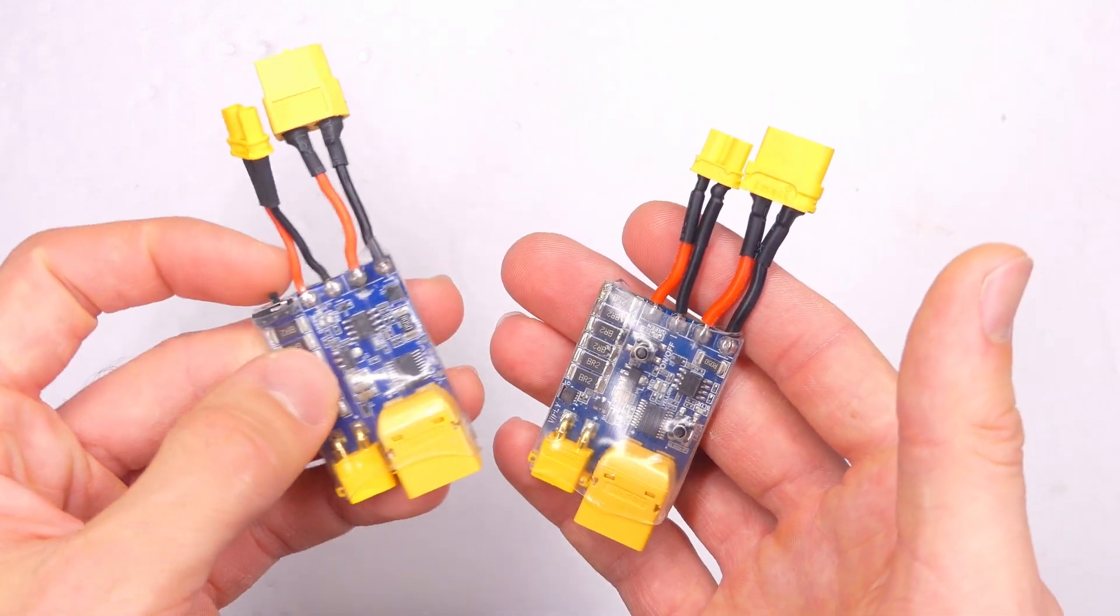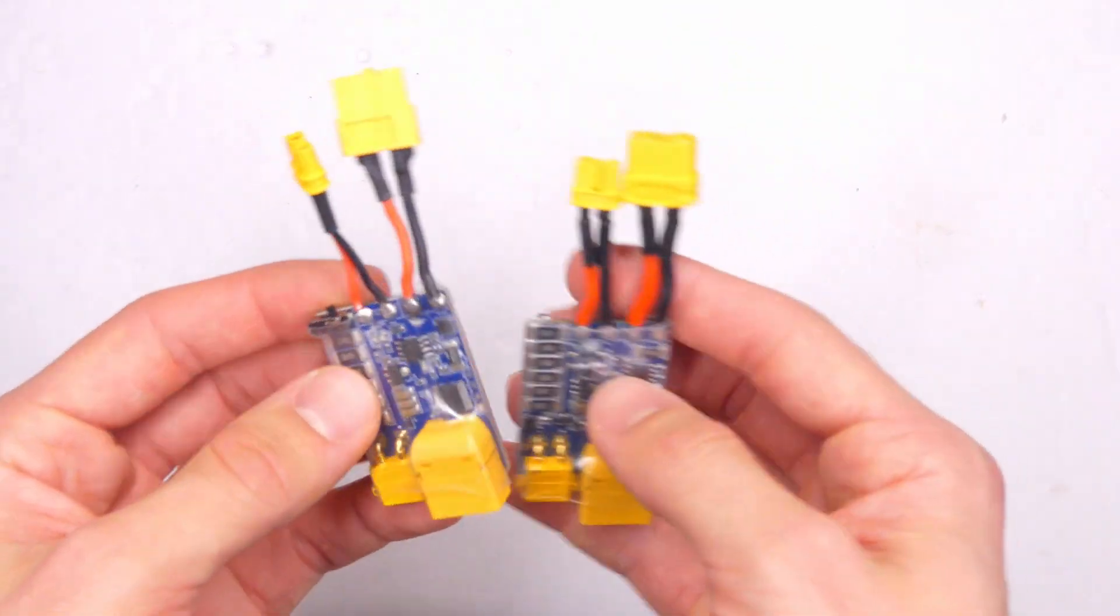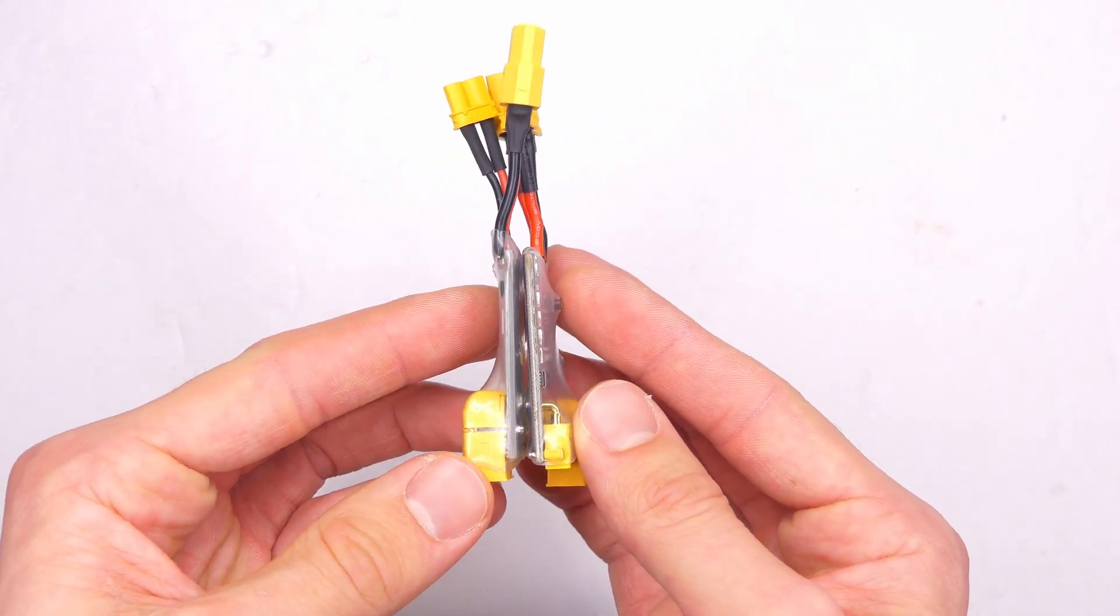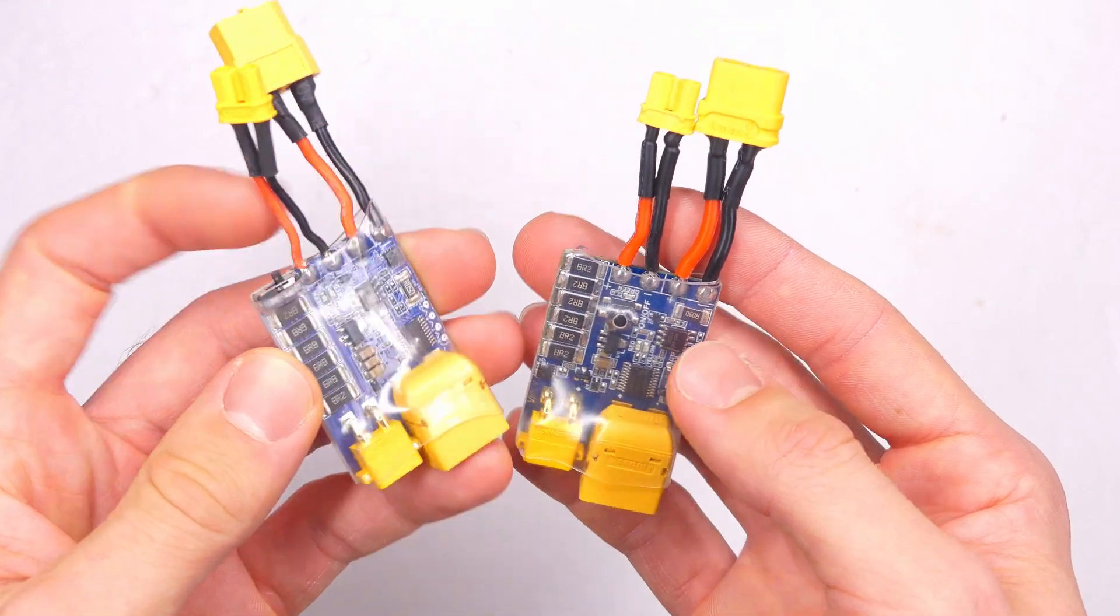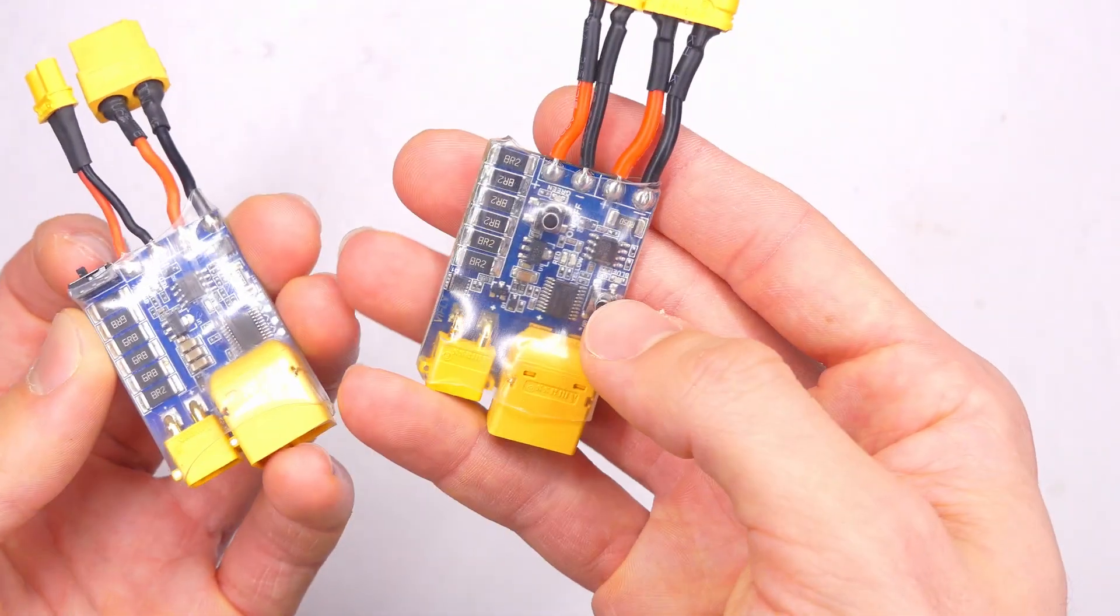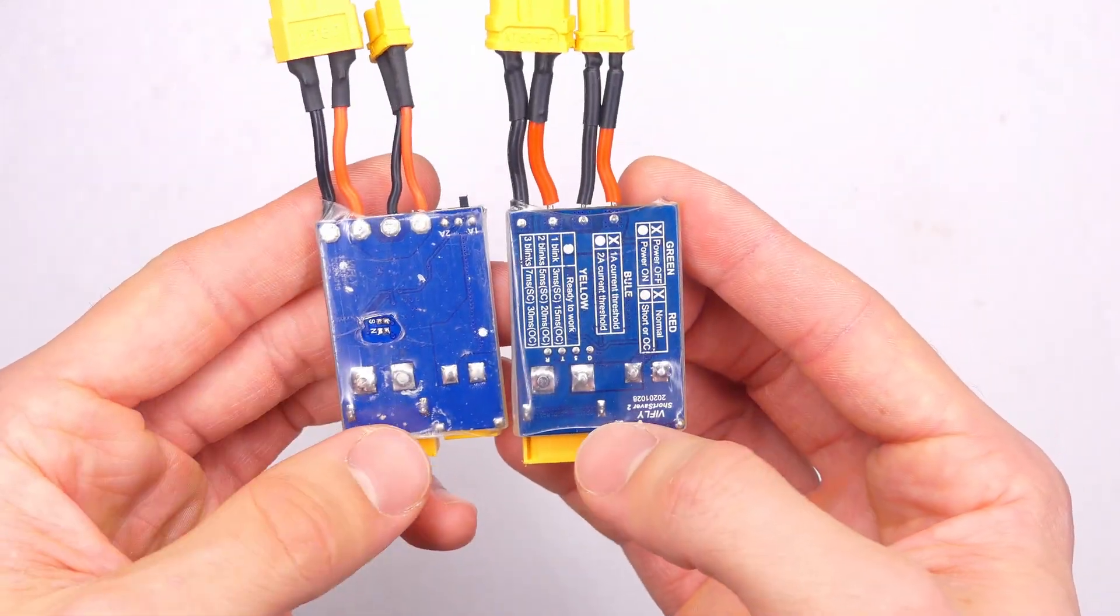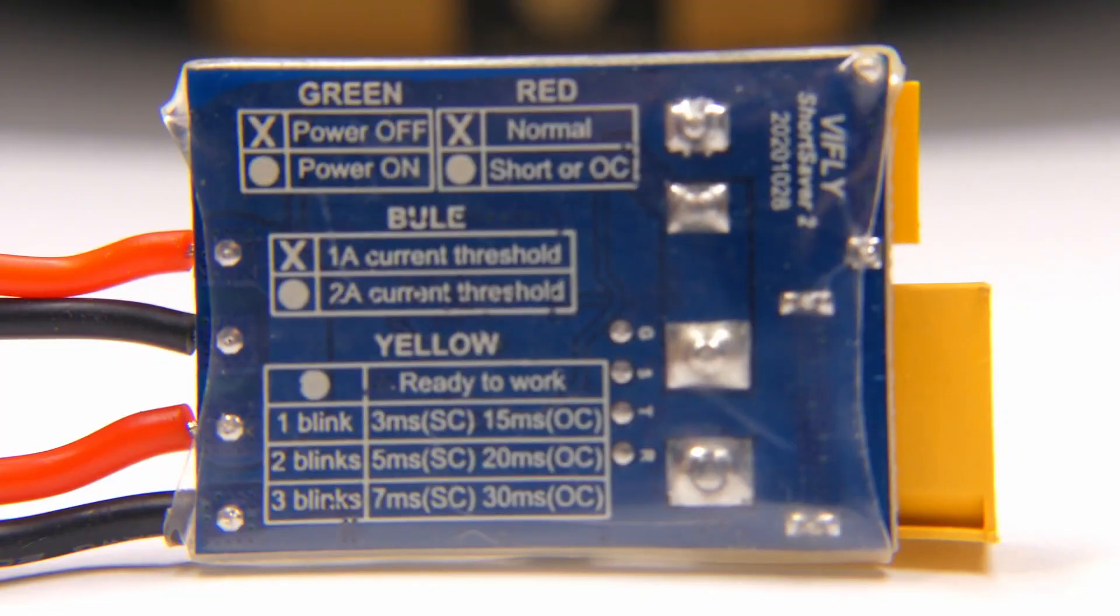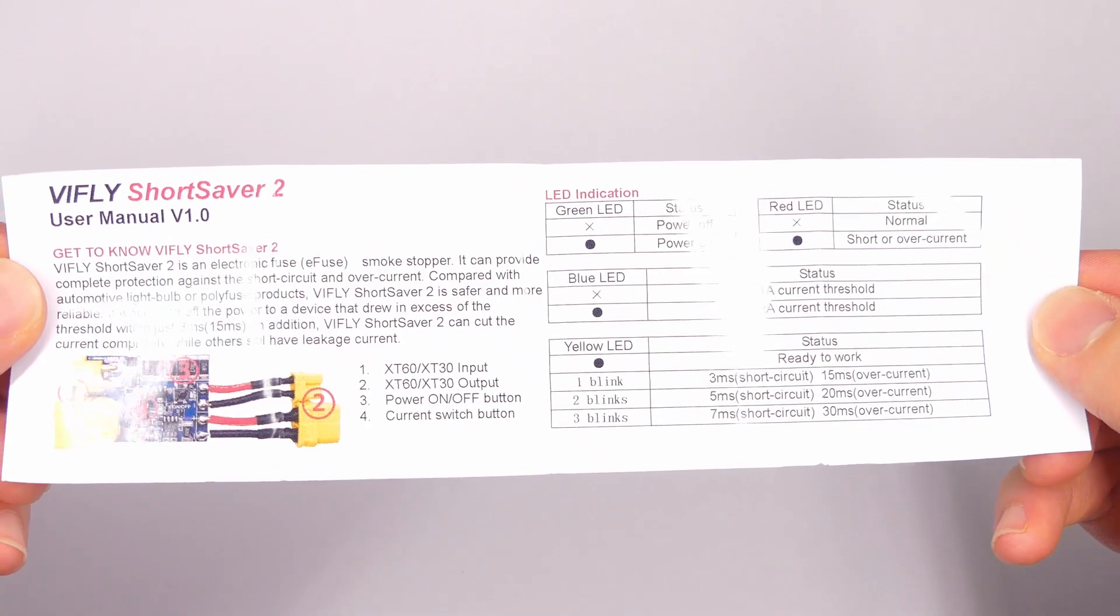And physically, these two Shortsavers, the old one on the left and the new one on the right, are pretty much the same. They're about the same size, pretty much the same board. The major difference is that the old one had a switch for the amp setting, whereas the new one has a push button. And then on the back, the new one has instructions for what all the lights mean and stuff. So that's pretty cool. That's a nice quick reference, whereas the old one does not.